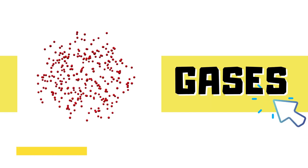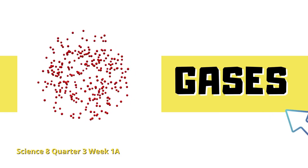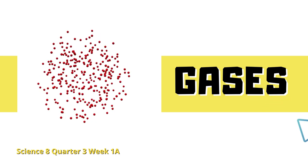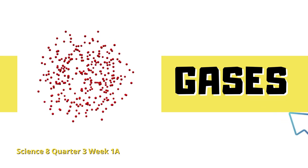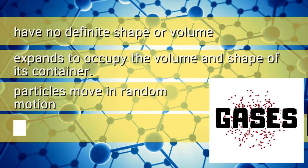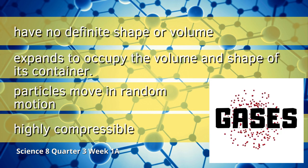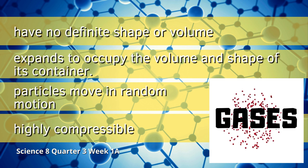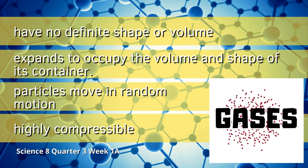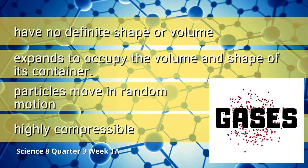Gases have no definite shape or volume. Gas is the state in which matter expands to occupy the volume and shape of its container. Gases have low density, which contains scattered molecules that are dispersed across a given volume. Particles of gases move in random motion with little or no attraction to each other. Gases are highly compressible.